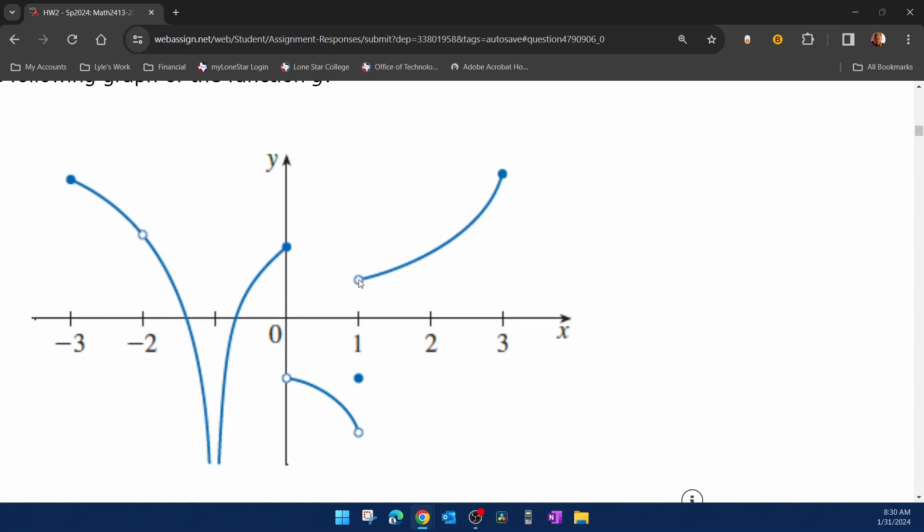And at positive one, the graph is discontinuous. Notice that the function value does exist. So it's not because f of one isn't defined, it is defined. It is because the limit doesn't exist. You do not approach the same height from the left and the right.